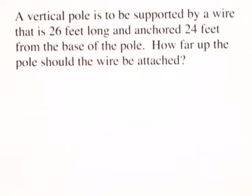A vertical pole is to be supported by a wire that is 26 feet long and anchored 24 feet from the base of the pole. How far up the pole should the wire be attached?